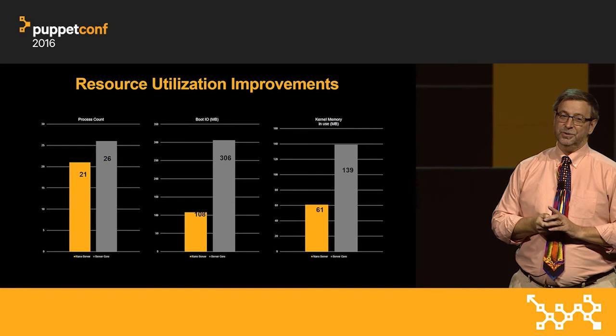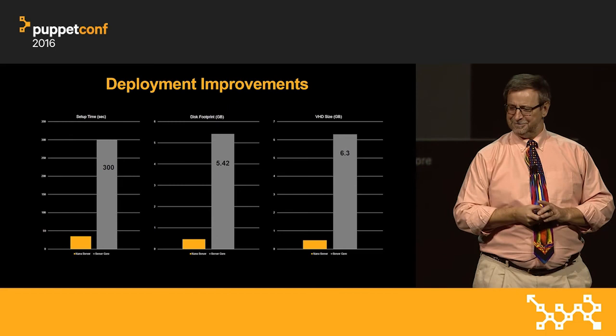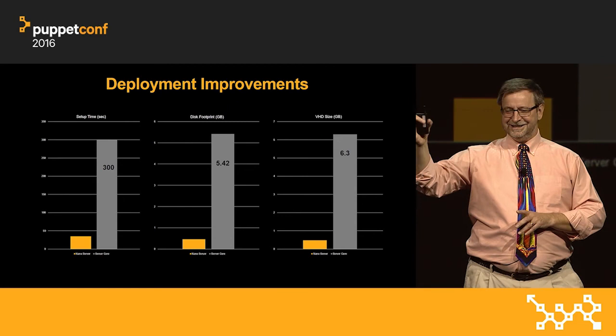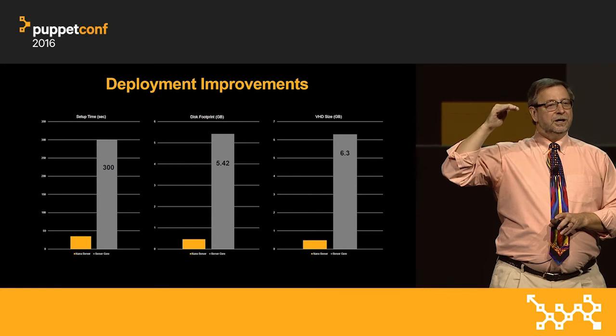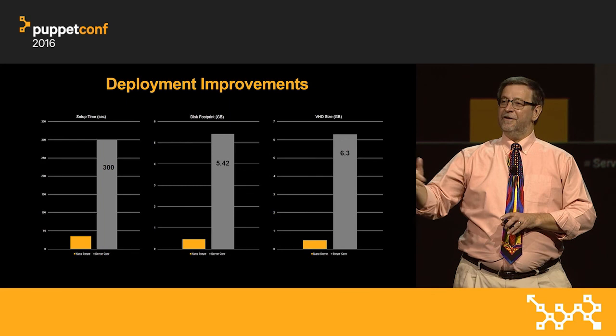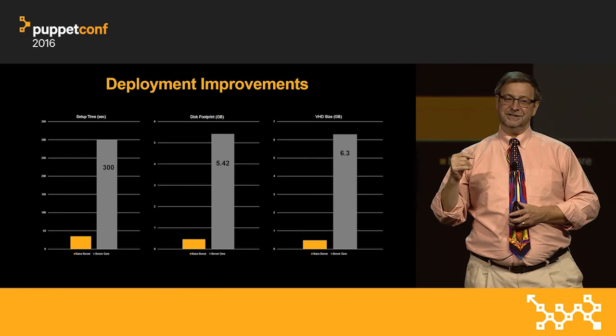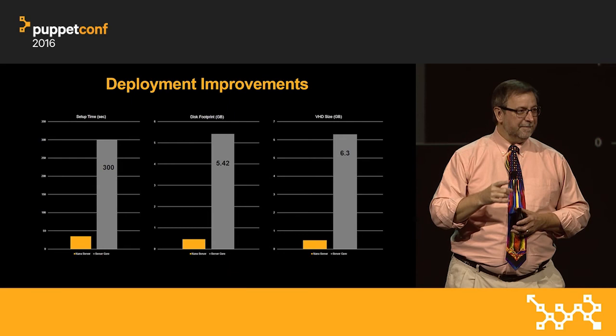Here's where it really gets exciting in deployment improvements. The disk footprint: Server with a GUI is about 9 to 10 gigabyte VHD; Server Core is about 6 gigabytes; Nano Server is 480 megabytes. Windows Server in 480 megabytes. This thing boots up incredibly fast — put it in a Gen 2 VM running on an SSD and Windows Server can reboot in 2.5 seconds.